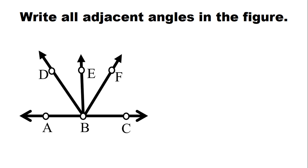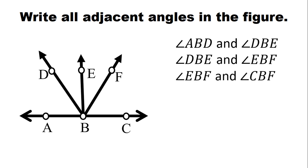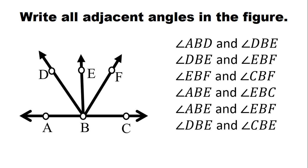Okay. So ano yung mga Adjacent Angles dito? We have angle ABD and angle DBE, angle DBE and angle EBF, angle EBF and angle CBF, angle ABE and angle EBC, angle ABE and angle EBF, angle DBE and angle CBE, angle DBF and angle CBF. Kung may nakita pa kayong adjacent angles na hindi ko nalagay, ilagay nyo na lang sa comment section then ako masasabi kung adjacent angles nga ba yun o hindi.